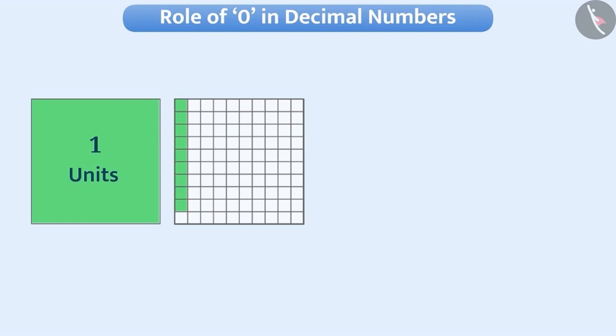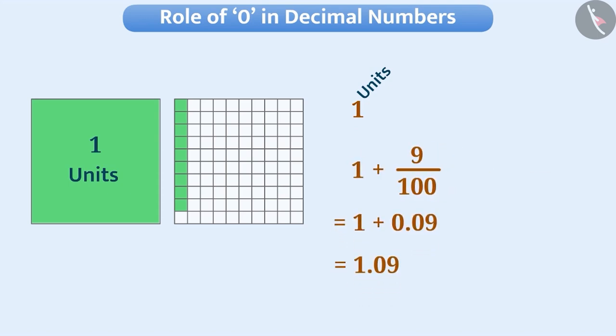One square means one unit. So, we will write 1 in units place. Here, another square is divided into hundred parts and nine parts are taken from it. So, we can say that along with one unit, there are 9 hundredths, which is represented in decimal form as 1.09.